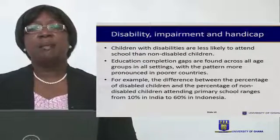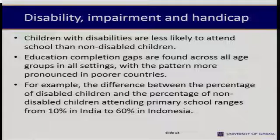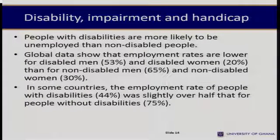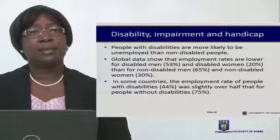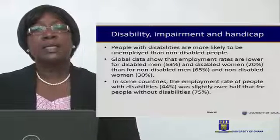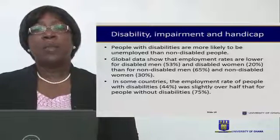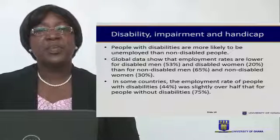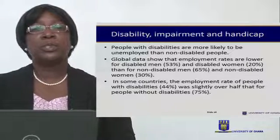Children with disabilities are less likely to attend school. The difference between the percentage of disabled and non-disabled children attending primary school ranges from 10% in India to 60% in Indonesia. People with disabilities are also more likely to be unemployed. Global data shows employment rates are lower — 53% for disabled men and 20% for disabled women.